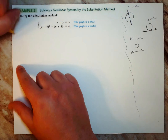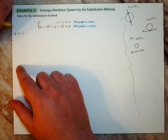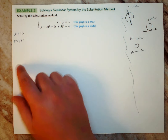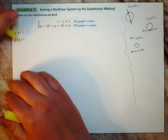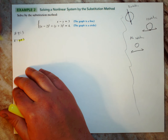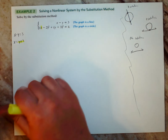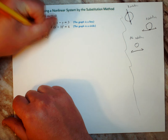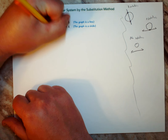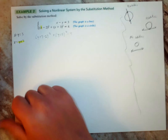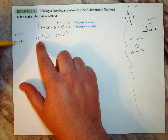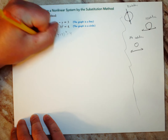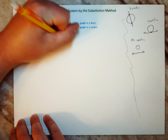Take x − y = 3 and solve for x: x = y + 3. Now substitute that into the circle equation. Where x appears, replace it with (y + 3), giving (y + 3 − 2)² + (y + 3)² = 4, which simplifies to (y + 1)² + (y + 3)² = 4.